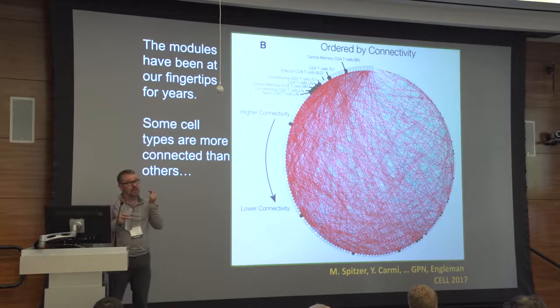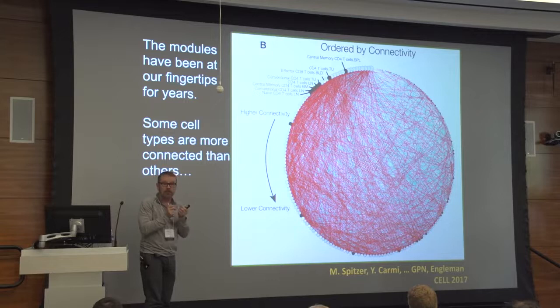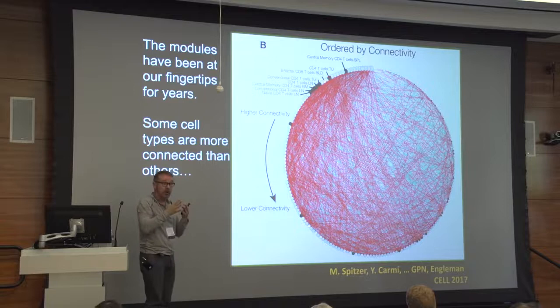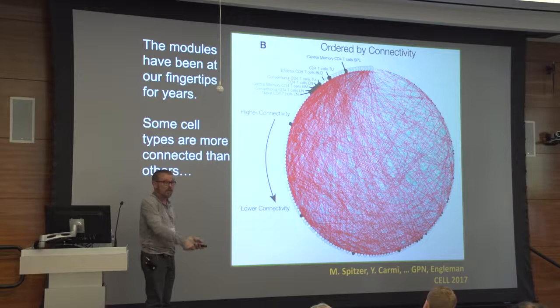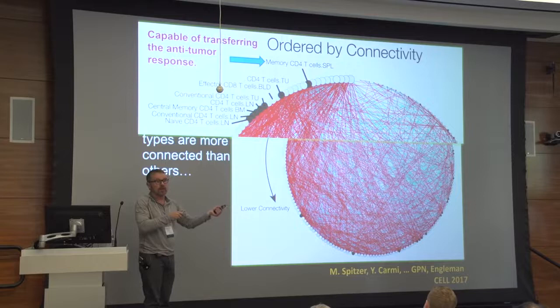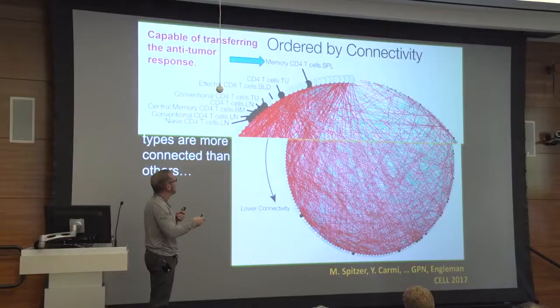So how do we figure out what's most important? Matt Spitzer — and I apologize for the metaphor — basically said the cell type with the biggest Twitter account has the most effect: the cell type talking to the most other cell types is probably at the center of the social network of how this is being coordinated. He took all cell types, ordered them by connectivity — positive or negative — and for those he could actually sort, put them into a naive mouse, challenged that mouse with cancer, and found that a memory CD4-positive T cell from the periphery was capable of transferring that effect.